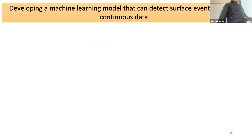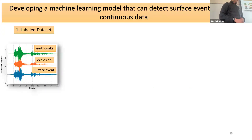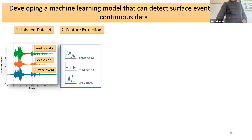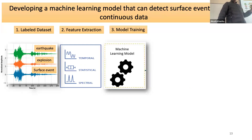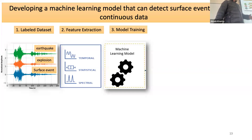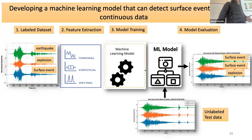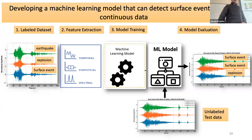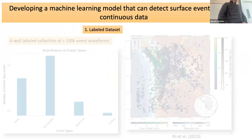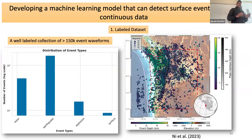To develop a classic machine learning model, we need: a labeled dataset, feature extraction from that data, tuning and training the machine learning model, and finally testing it on an unseen dataset to get resulting labels.